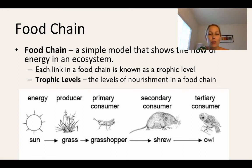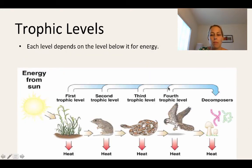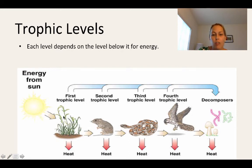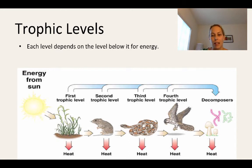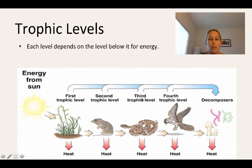Each trophic level depends on the level below it for energy. Producers are always the first trophic level. Herbivores are always the second trophic level because they eat plants. The third and fourth trophic levels are carnivores. Omnivores can be found at the second, third, or fourth trophic level depending on the food chain you are looking at.